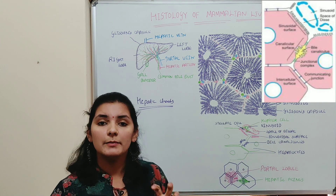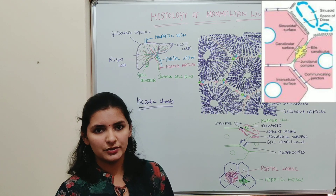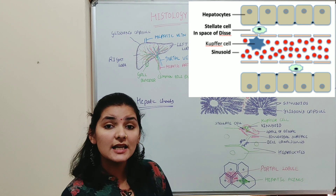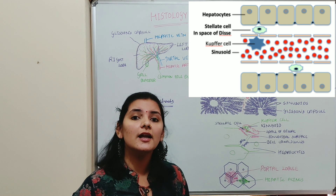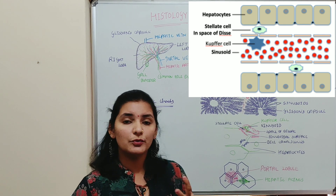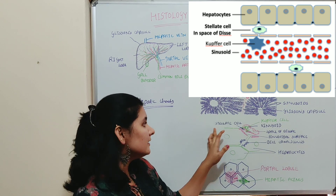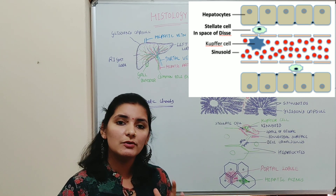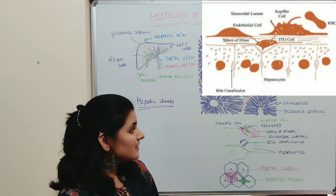The space of Disse is of great importance because it contains special types of cells which perform main functions of the liver. The first type of cell is the stellate cell. The function of the stellate cell is to accumulate vitamin A in lipid droplets — vitamin A present in the blood is accumulated by stellate cells in lipid droplets. This demonstrates the liver's function of storing nutrients present in the blood.